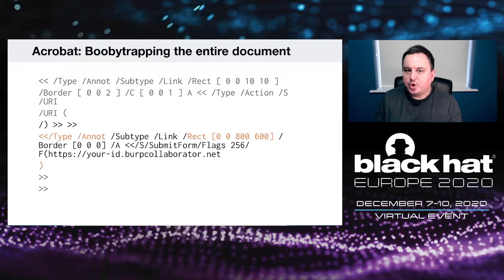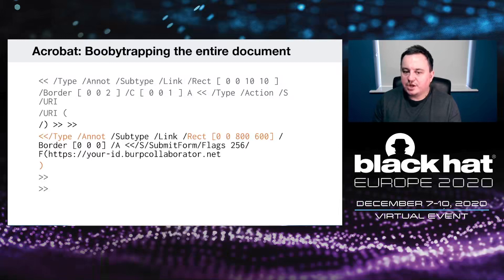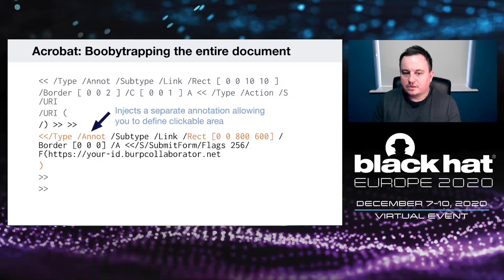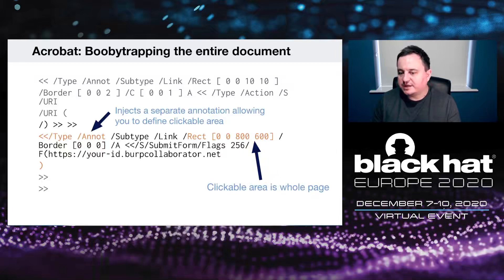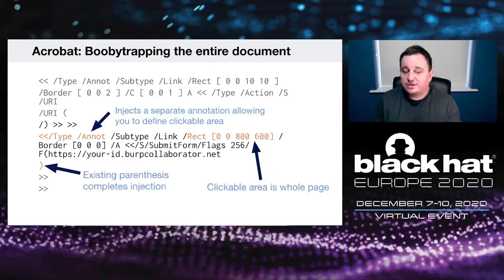I found a way to booby trap the entire PDF document so no matter where the victim clicks on the page, the JavaScript or submit form action will be called. I inject a separate annotation and specify the 'Rect' dictionary key, which specifies where on the page the annotation is clickable — in this case the x and y coordinates and width and height — making the entire page clickable, then using the existing parenthesis to complete the injection.